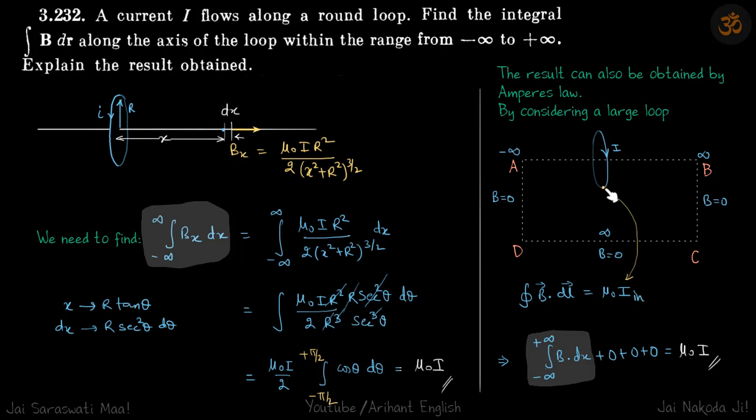The current cutting through this area is only i, which is cutting here. So the line integral B dot dl is equal to mu naught i, which becomes mu naught i.